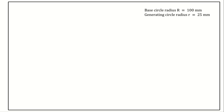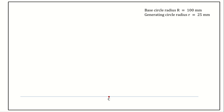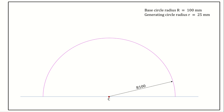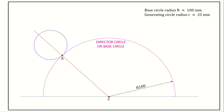In the question, the base circle radius R is equal to 100 mm and the generating circle radius r is equal to 25 mm. Take a compass, measure 100 mm as radius, and draw a semicircle with centre C. This circle is the director circle or base circle. Locate the point A on the base circle.